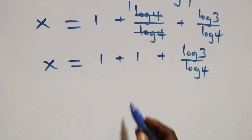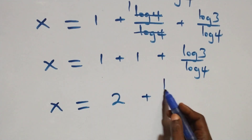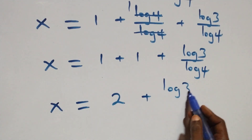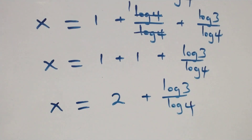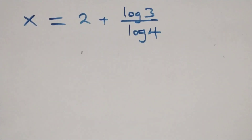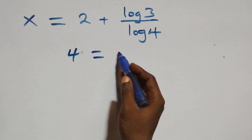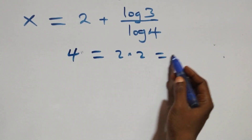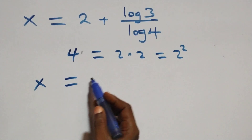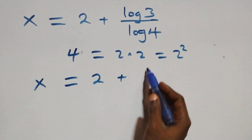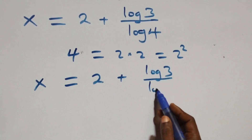This becomes x equals to 1 plus 1 plus log 3 over log 4. Next step here, we can write 4 as 2 times 2, which is the same thing as 2 squared. That is, we have x equals to 2 plus log 3 over log 2 squared.